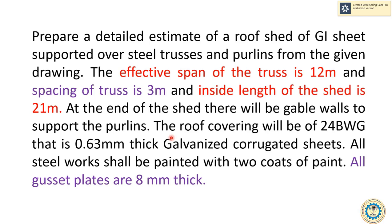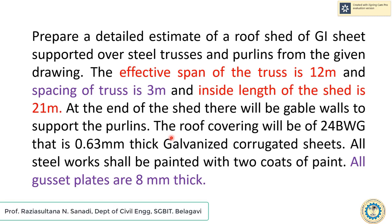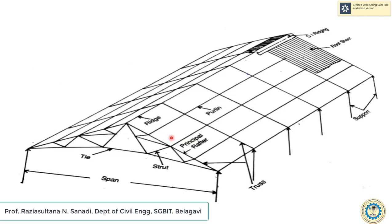Before starting with the problem, let us first discuss what a roof truss is and what are the elements of a roof truss. A roof truss shed consists of timber or steel roof trusses supported over walls, pillars, or columns spaced at regular intervals. Over the trusses run the purlins, and over the purlins roof covering is provided.